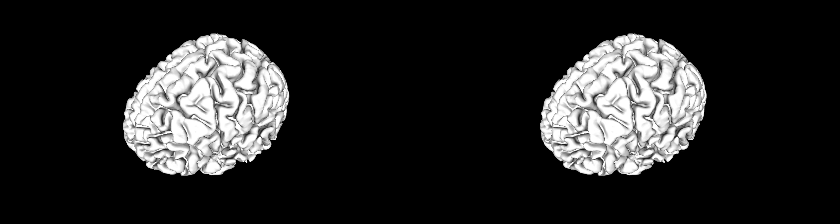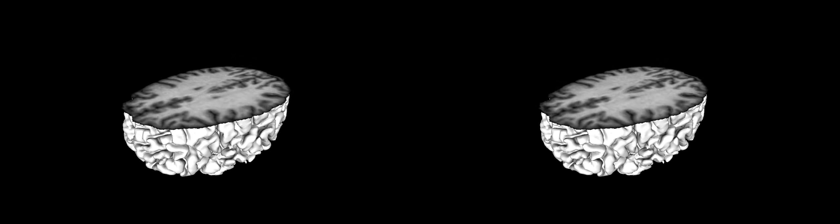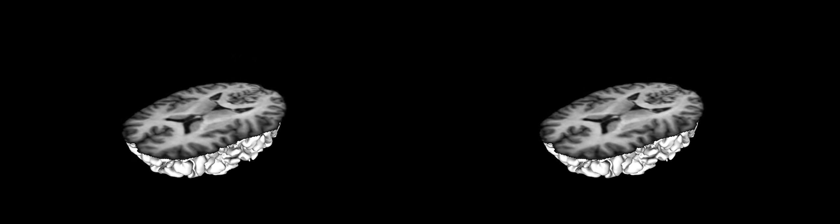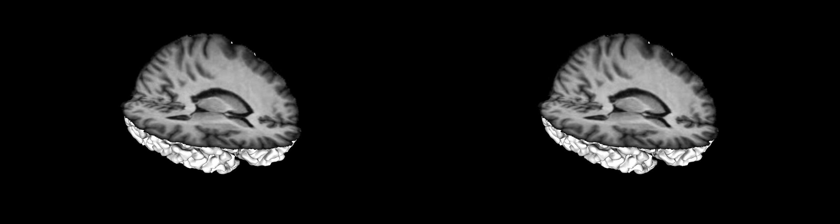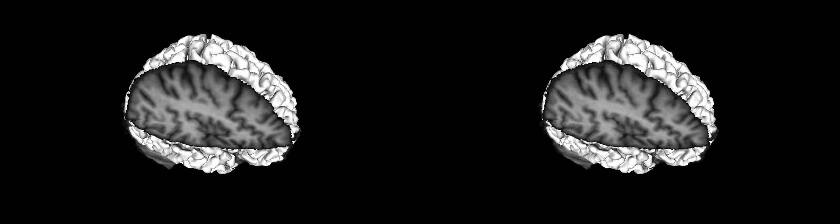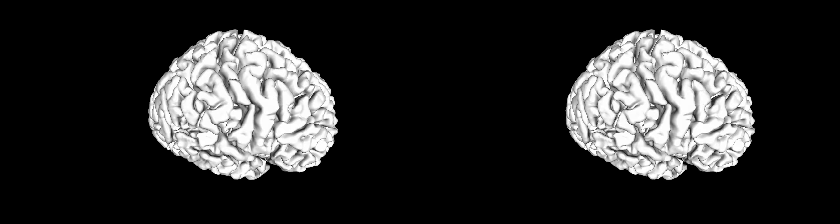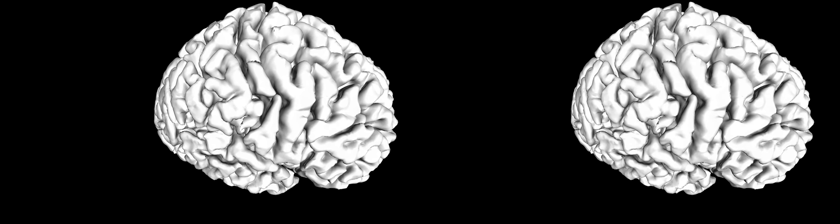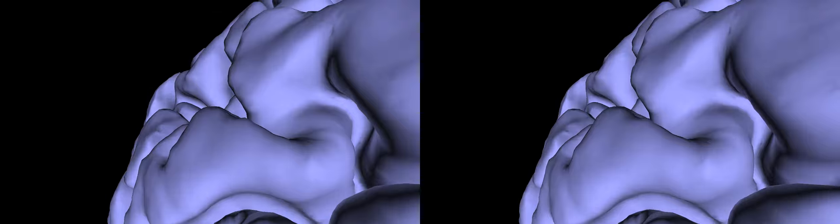MR tomography can be used to explore brain anatomy. Slices of the 3D volume show the grey and white matter of the brain. A flight over the brain surface allows for a close-up view of the gyrification.